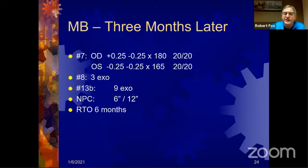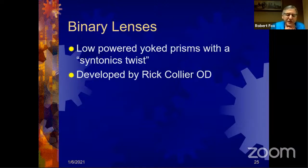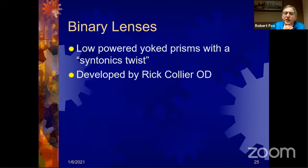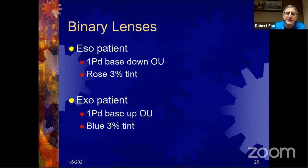Dr. Streff lectured on the monocular add technique at COVD and even did a B-scan ultrasound presenting a case where he measured changes in axial length after prescribing a monocular add. We use a lot of lenses and prisms in combinations. The late Dr. Rick Collier out of Texas had something called binary lenses — low-powered yoke prisms with a syntonic twist. It's a combination of very low-powered yoke prisms and very mild tints. For the ESO patient, we frequently give one prism diopter base down OU with a pink or rose 3% tint, which is minimal. This is really helpful for those headachy patients who are a little esophoric and complain of chronic headaches, especially under fluorescent lights.